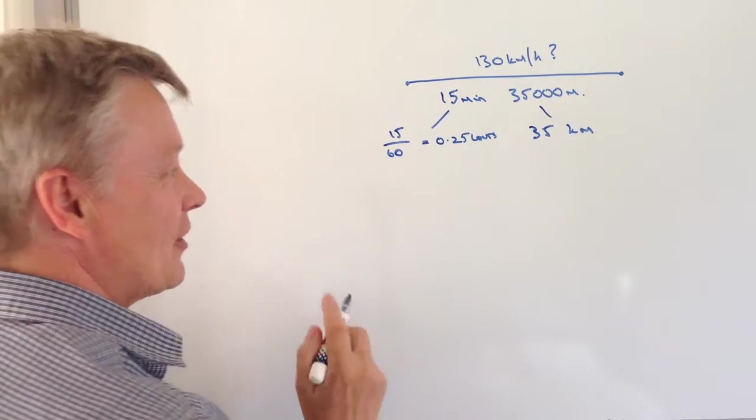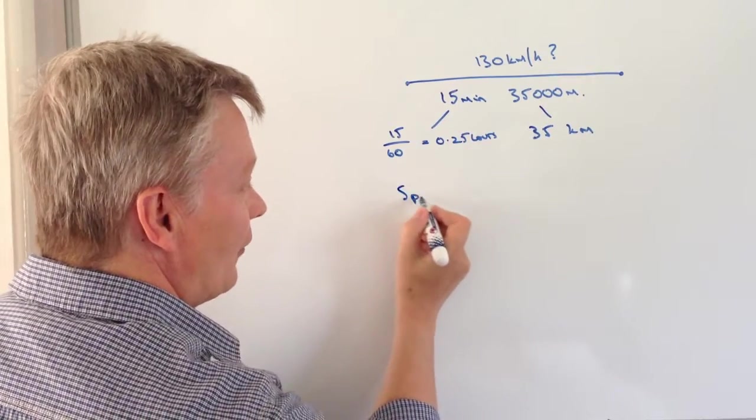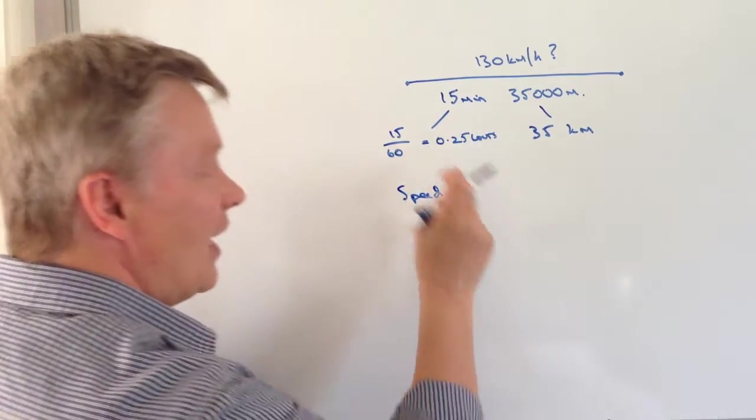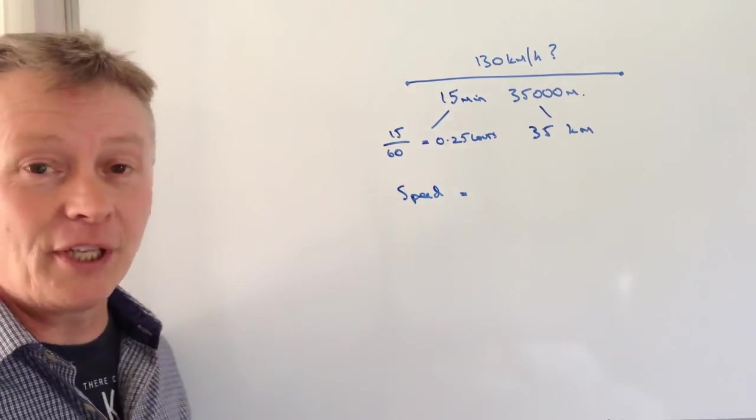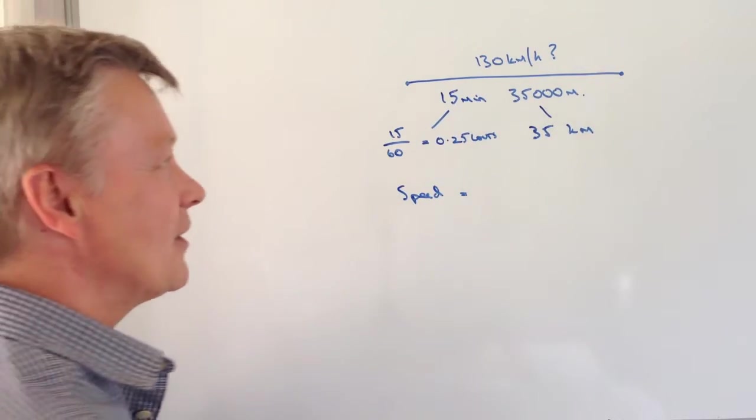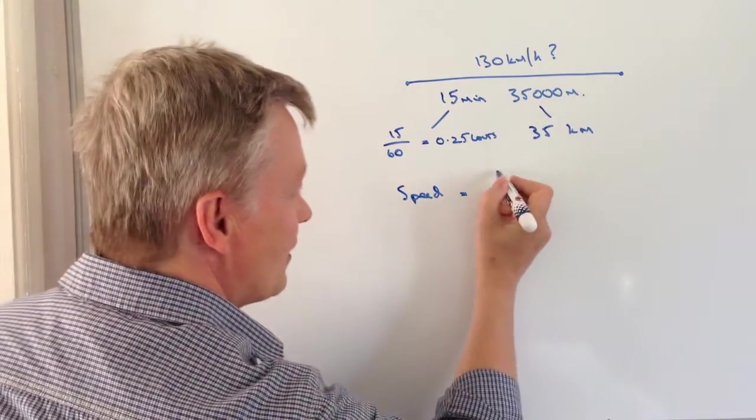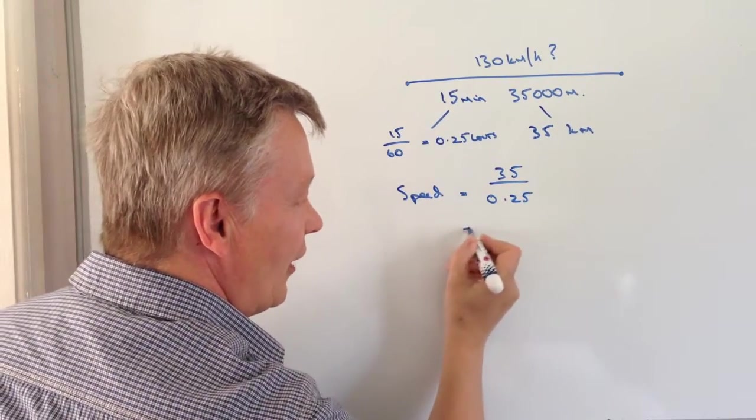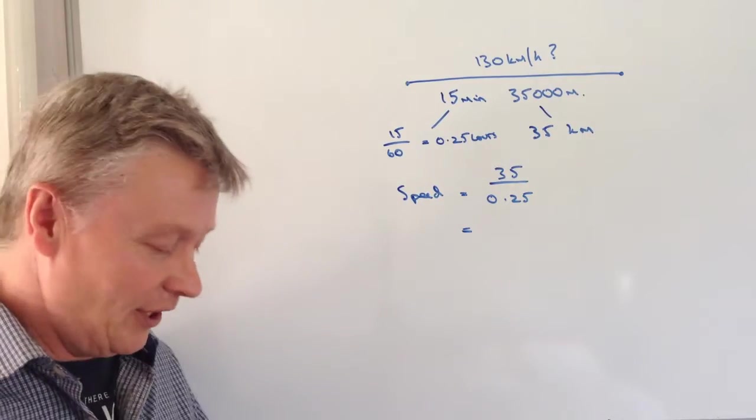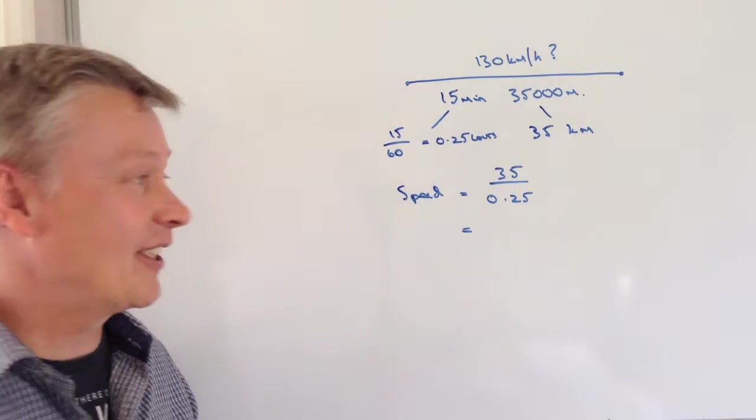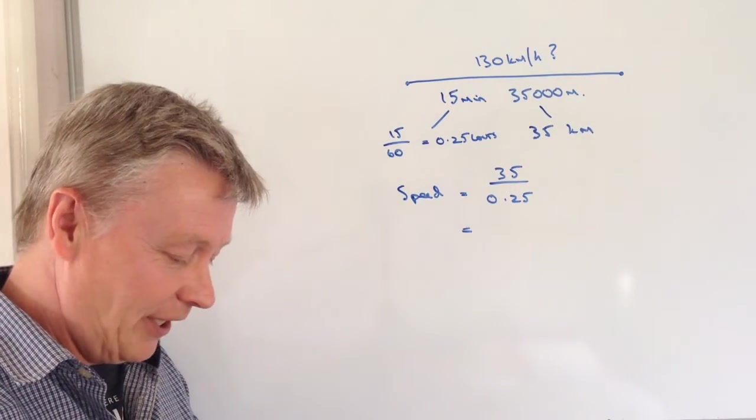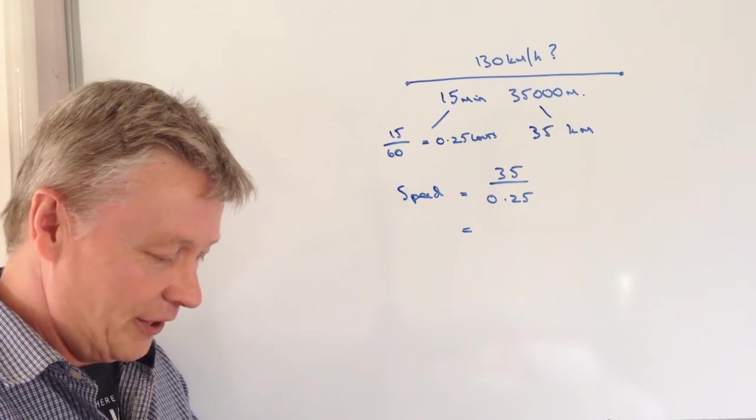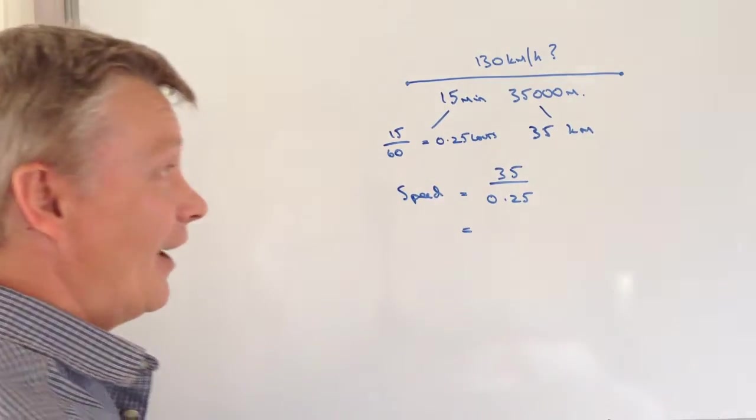Next, I'm going to work out the speed if they're traveling for 15 minutes, 35,000 meters. So speed equals distance, which is 35, divided by time, which is 0.25. If I put that into my calculator, 35 divided by 0.25, that's going to be...